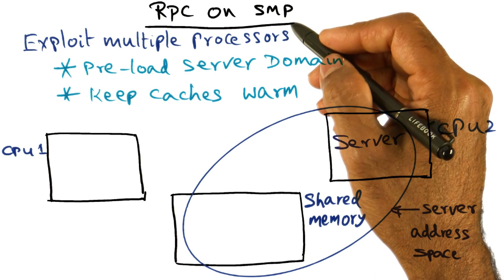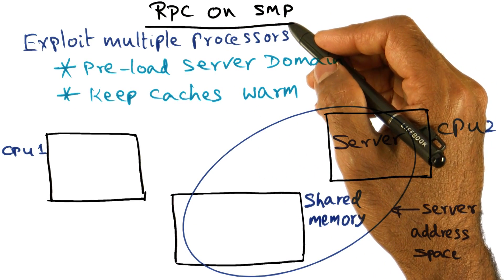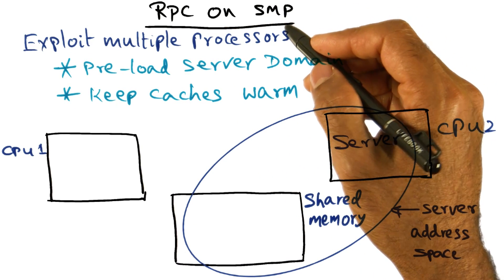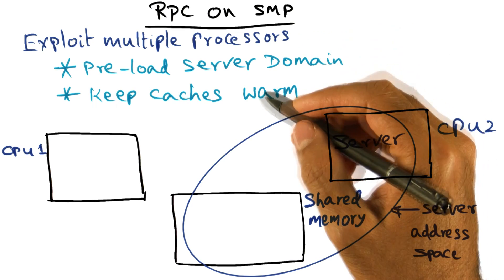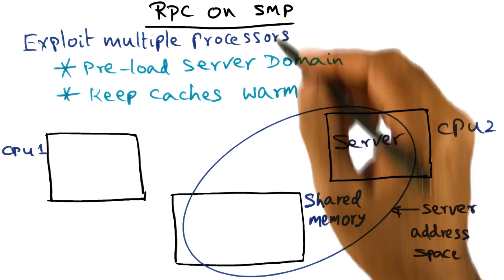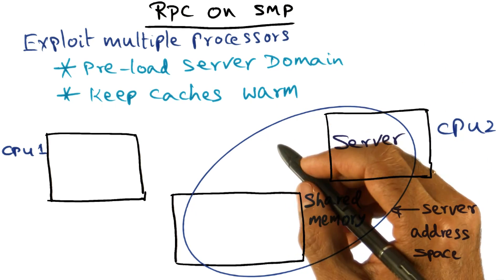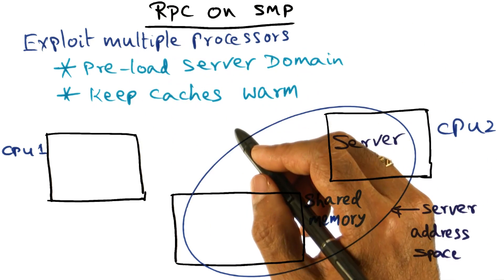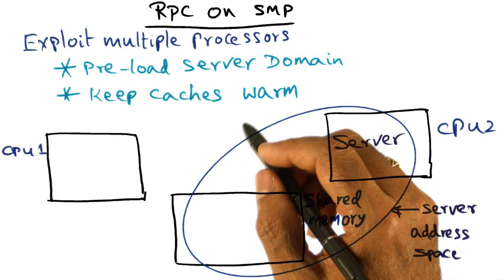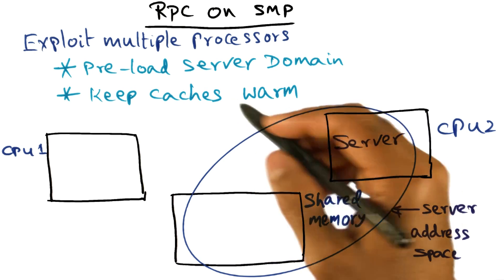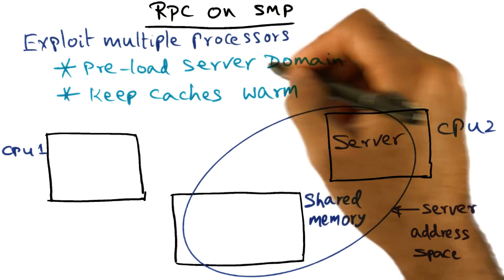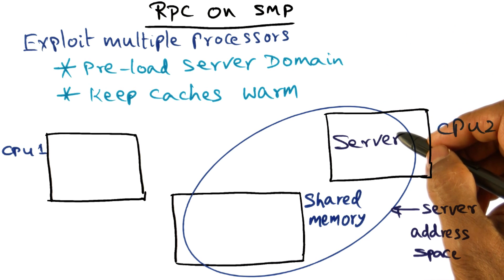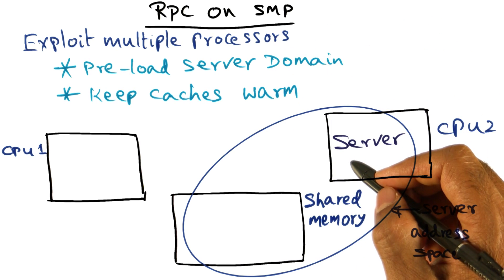This is where multiprocessor comes in. If you're implementing this RPC package on a shared memory multiprocessor, then we can exploit multiple processes available in the SMP. What we can do is preload the server domains in a particular processor.